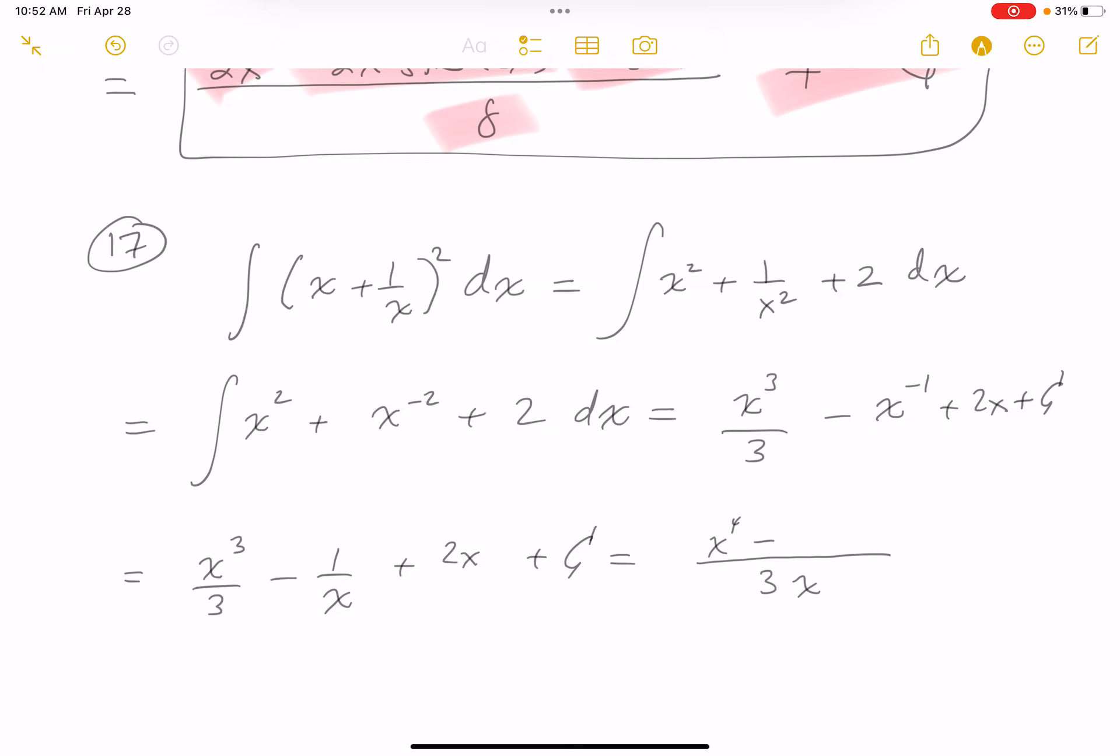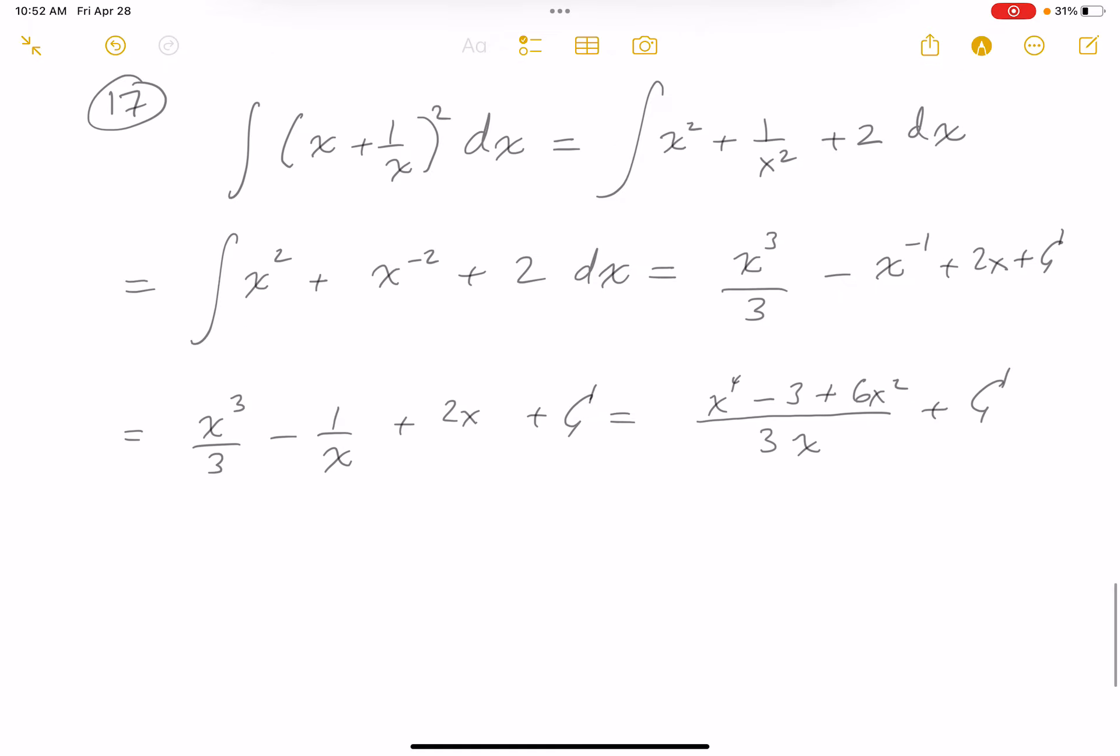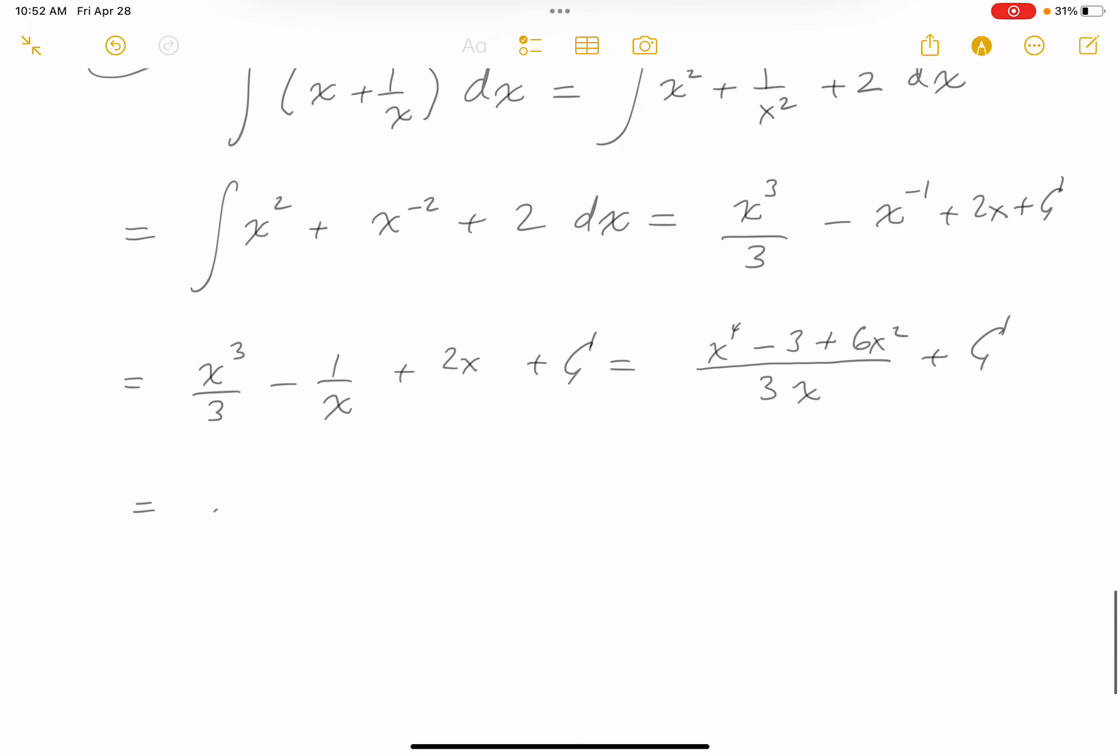You're going to get x4 minus 3 plus 6x squared plus c. I want to simplify that a little bit, and that's going to be 3x and write in order x4 plus 6x squared minus 3 plus c.